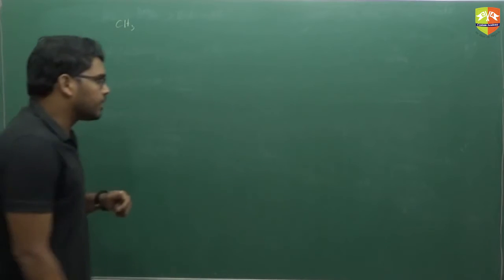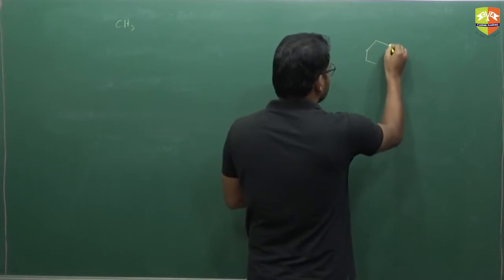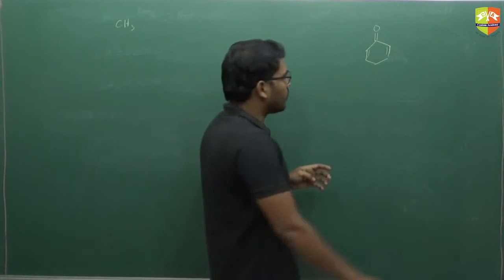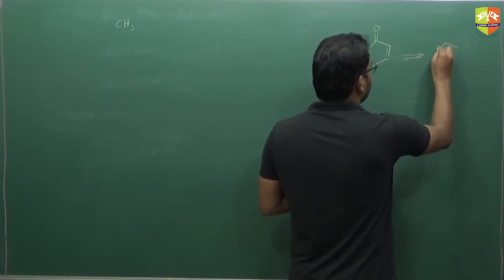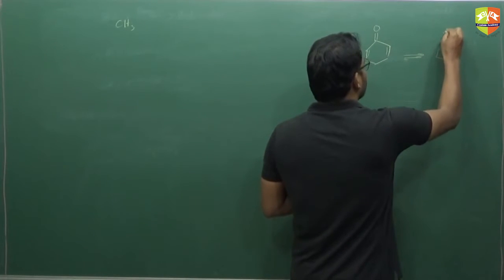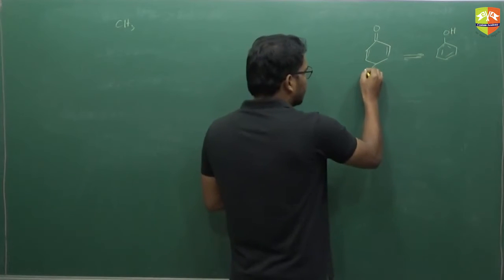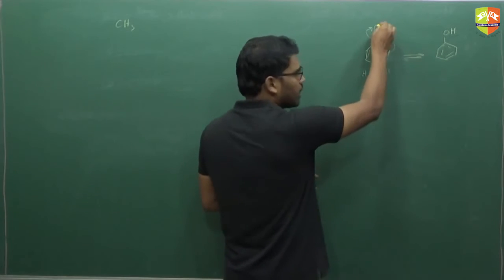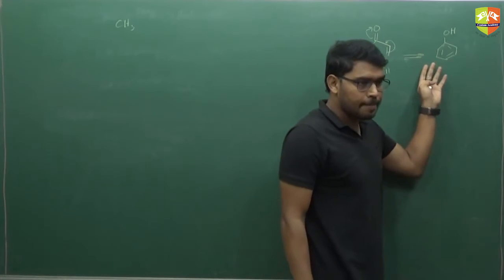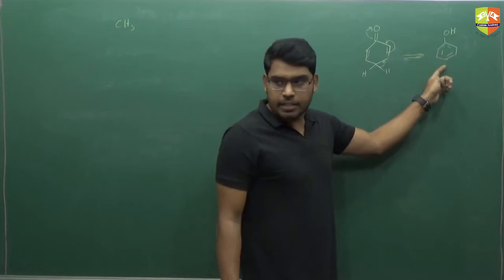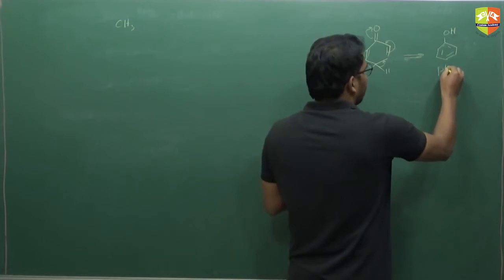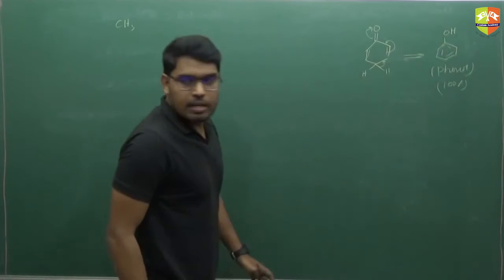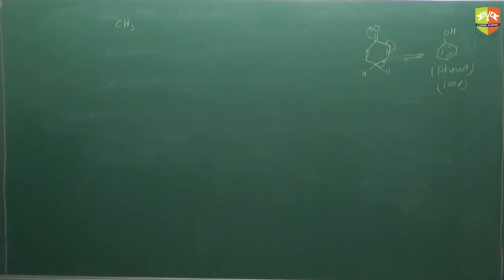Suppose if you have a compound like this, this converts into phenol after tautomerism. This H, one of the H will come out, this goes over here, this comes over here, and this H+ will attach onto this. So it is sp2 hybridized. Since it is phenol and it is aromatic, we can say the composition of this is 100%. This will entirely convert into phenol. So like that, based on the stability of the molecule, we can find out the percentages.